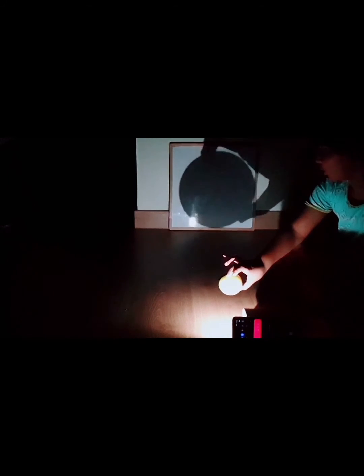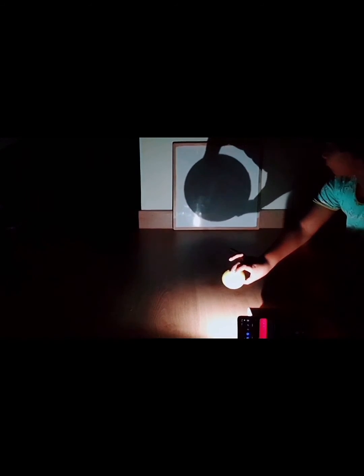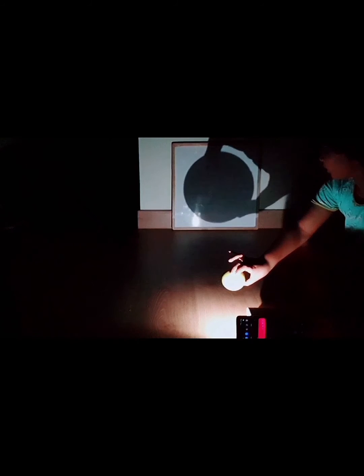This is because when an object is closer to the light source, it will block a large area of the light, increasing its shadow size.